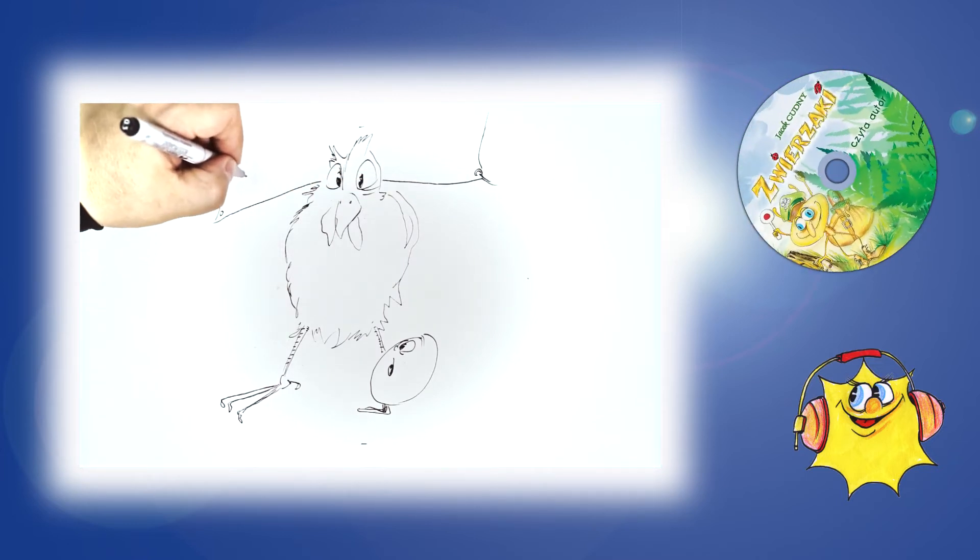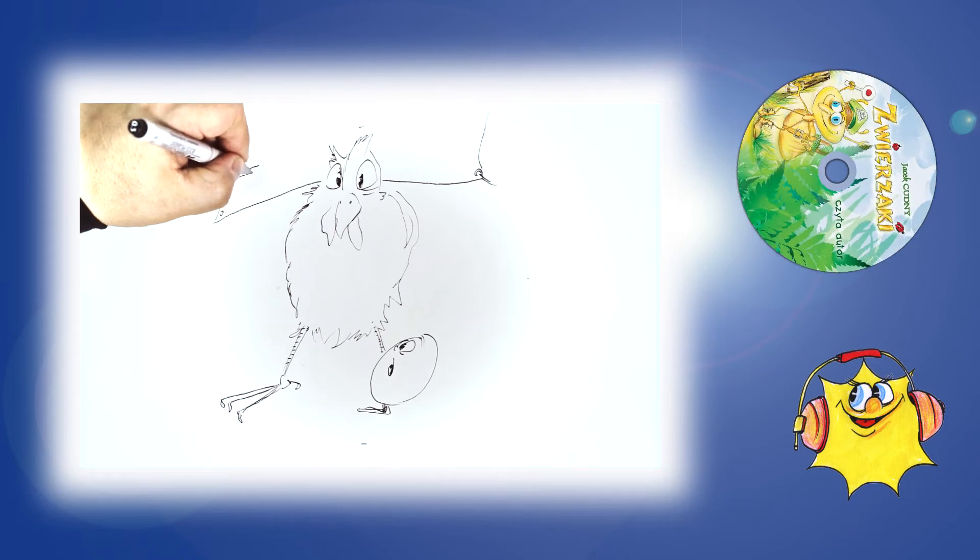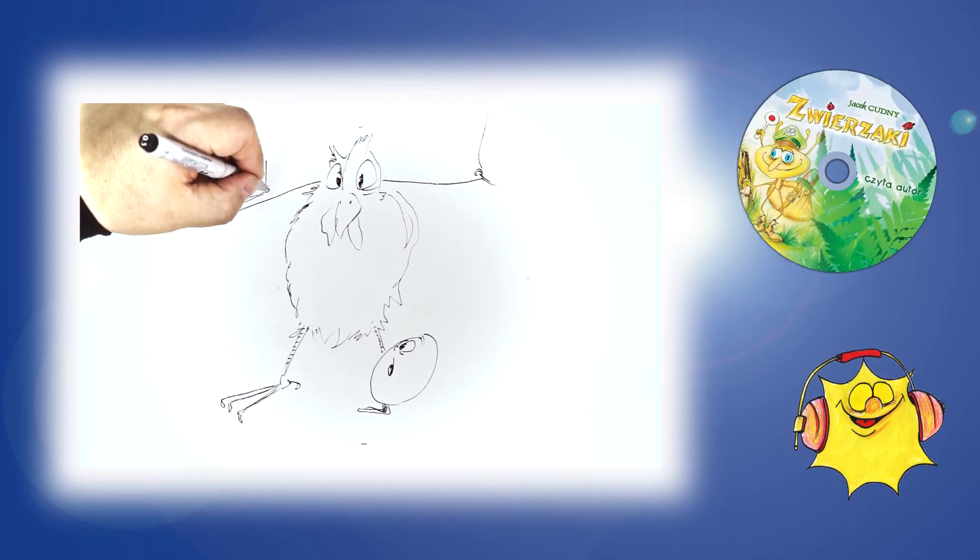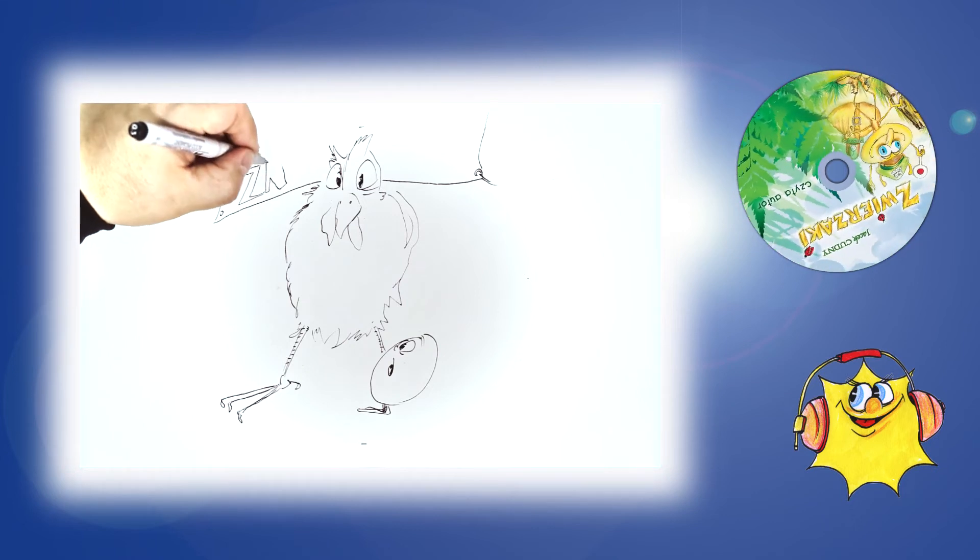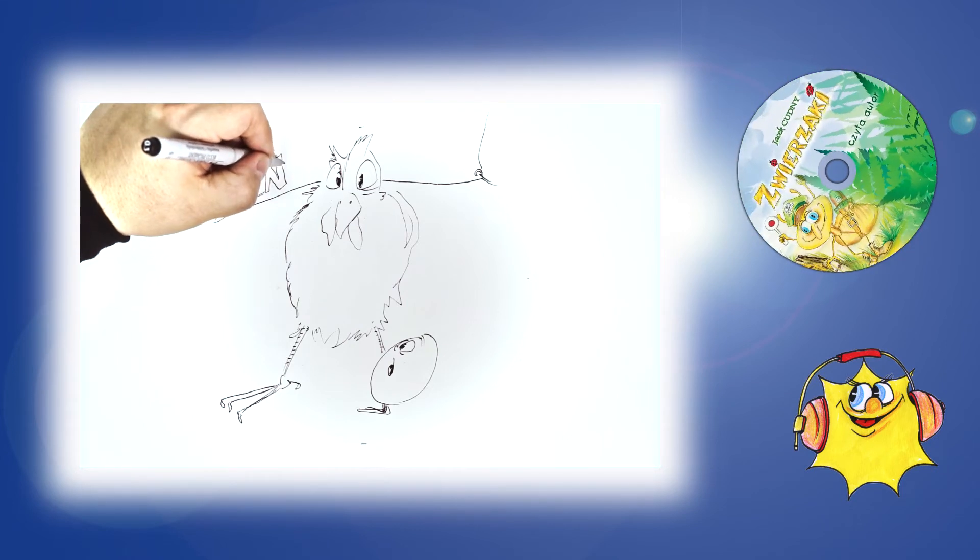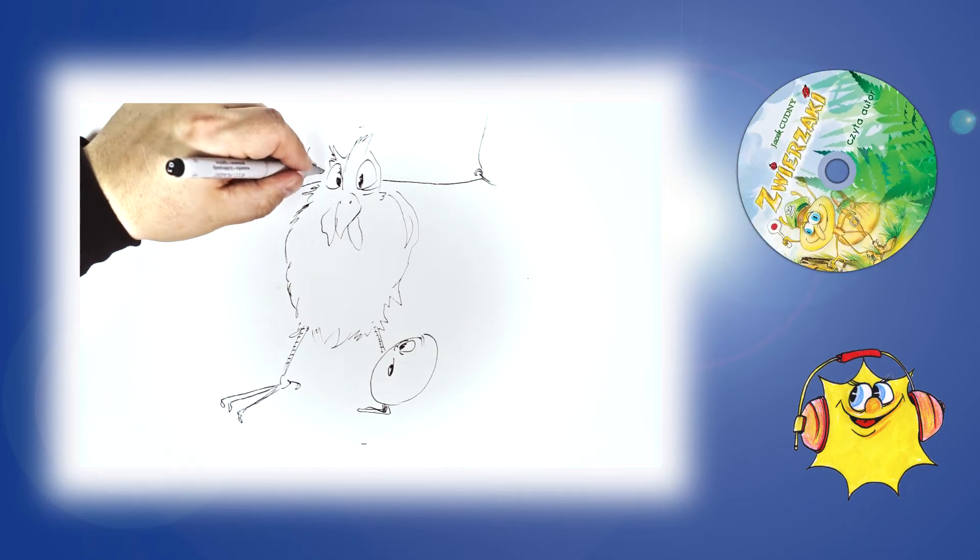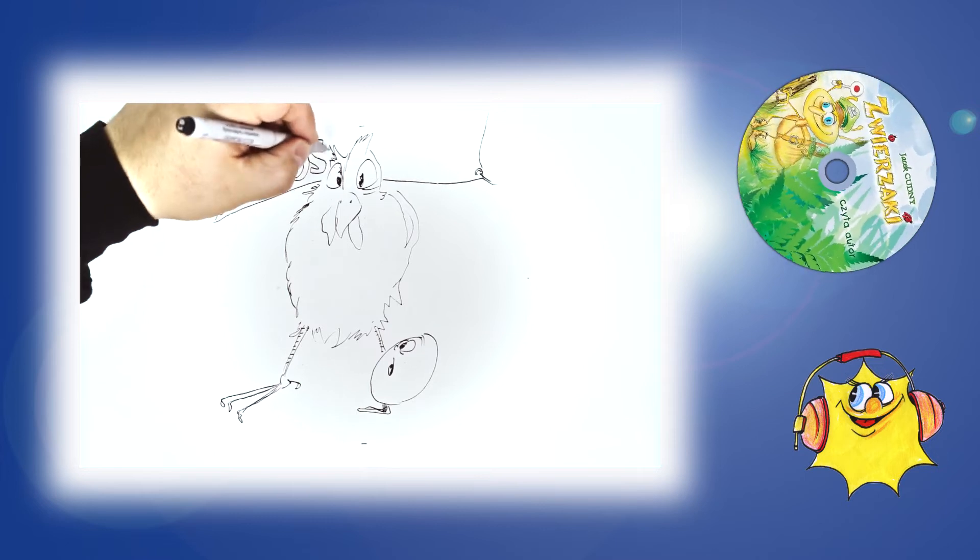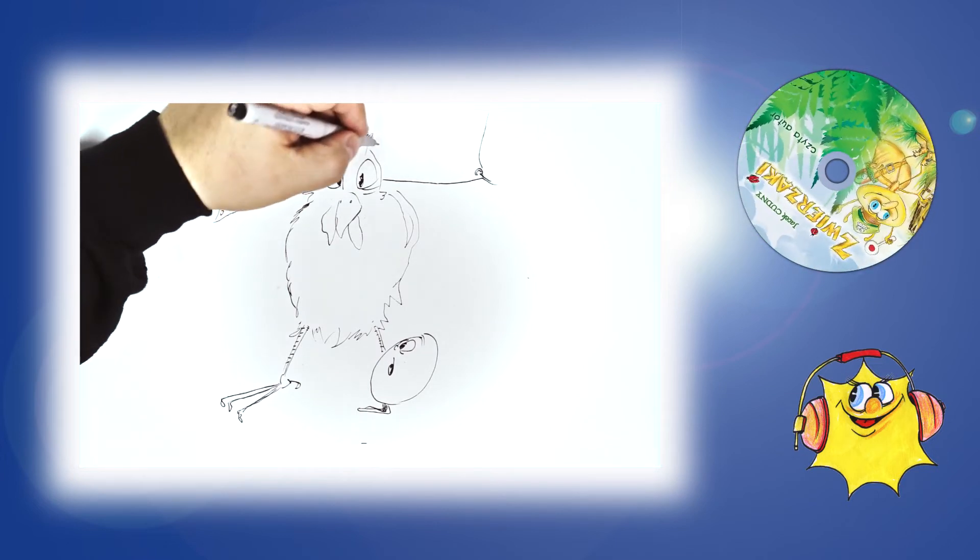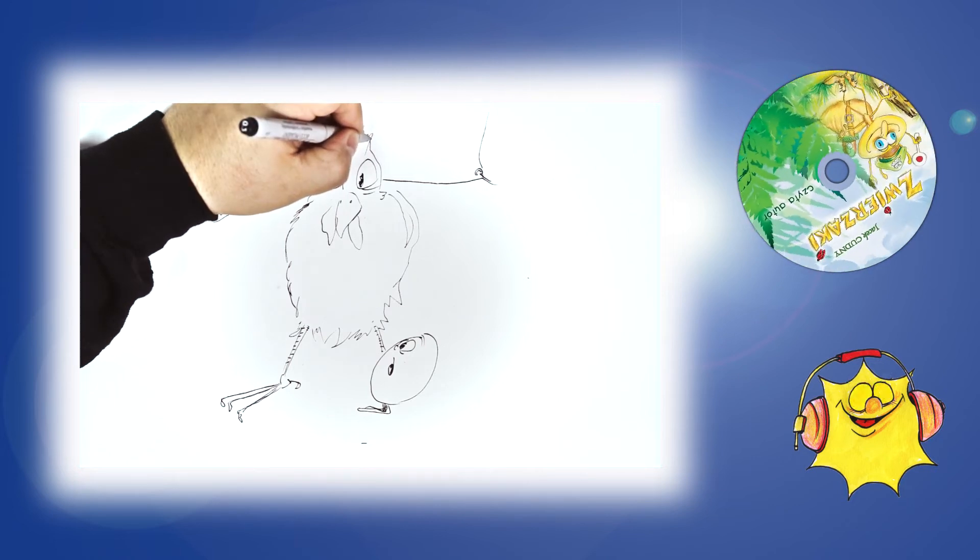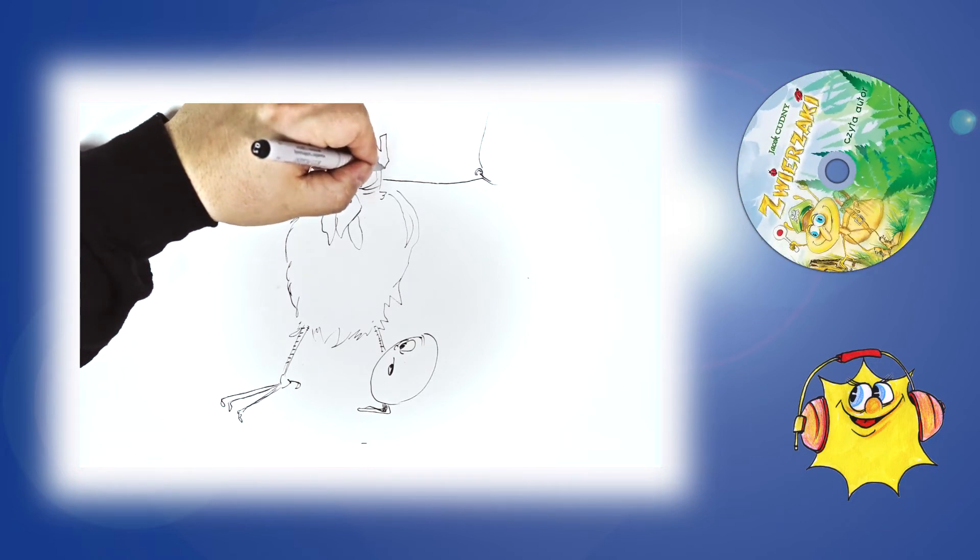News o strajku w Jajkowicy wkrótce lotem błyskawicy dotarł do kurników w kraju. Wtedy to do strajku raju dołączyła się kur z graja. Ale jaja, ale jaja. Co to było? Aj, aj, aj. Wnet ucierpiał cały kraj,